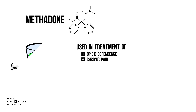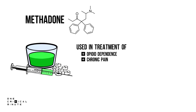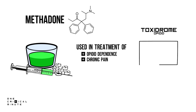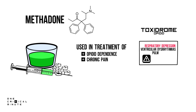As do all opioids, it binds predominantly to the mu receptor located in the central nervous system and the gastrointestinal tract. It is considered a depressant and could cause an opioid toxidrome. Adverse effects include those discussed in the video on the opioid toxidrome, the most important being respiratory depression. Others include ventricular dysrhythmias, pulmonary edema, ileus, and aspiration.